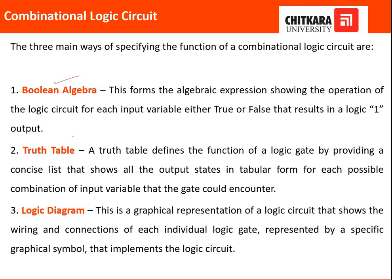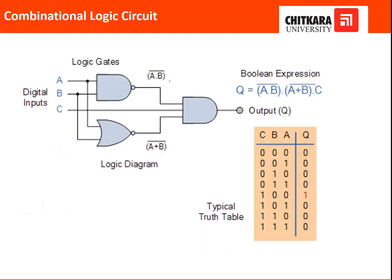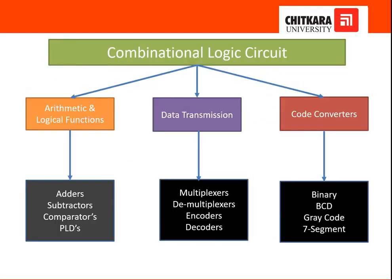In the logic diagram representation, we make combinations of logic gates to produce one combinational logic circuit. Another way is to represent it using a Boolean expression, where we write down the expression for the output function. The third representation is the truth table, where we keep values in a tabular format to show the output for each input combination.